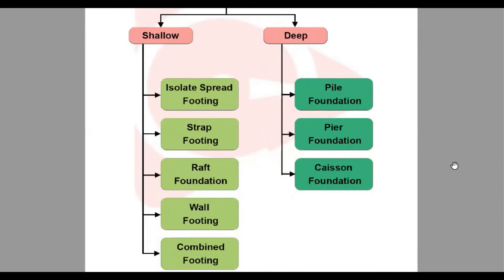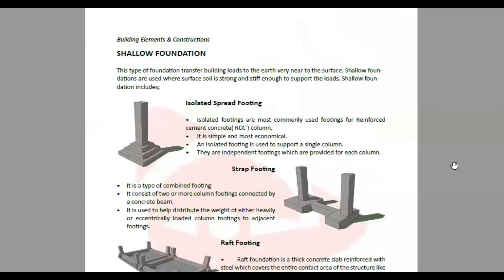Deep foundation is usually used for skyscrapers, G plus 2 buildings, and G plus 3 buildings. We use deep foundation for such structures. Pile foundation was already covered in the previous class. We support a building with deeper piles. Piers are rectangular columns used in deep foundation.